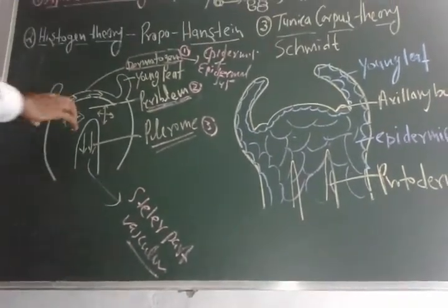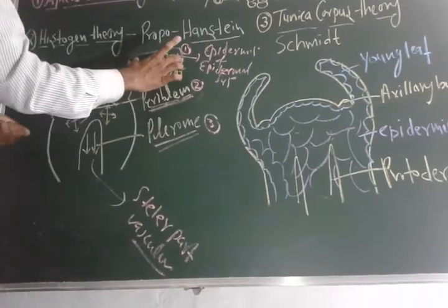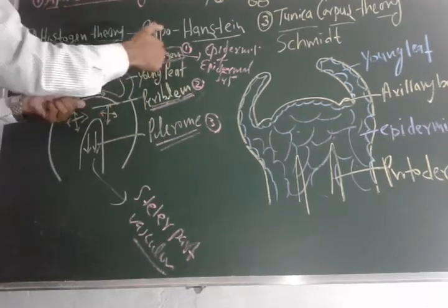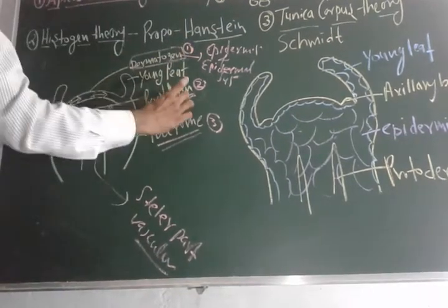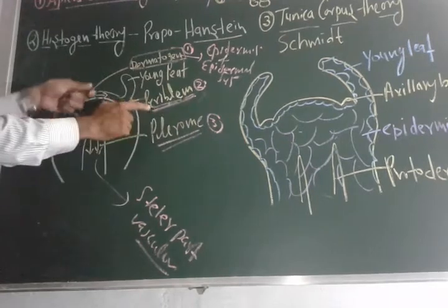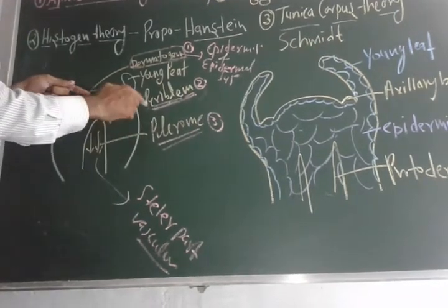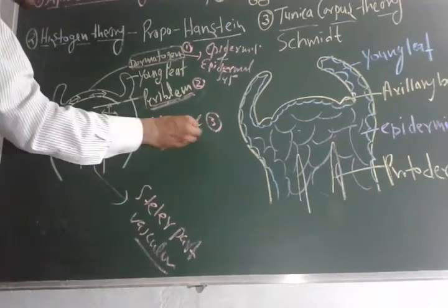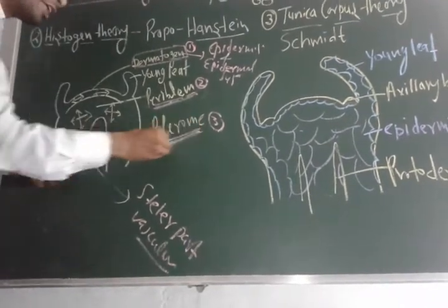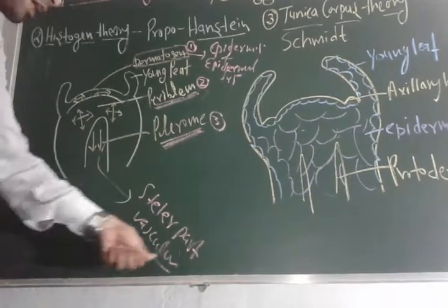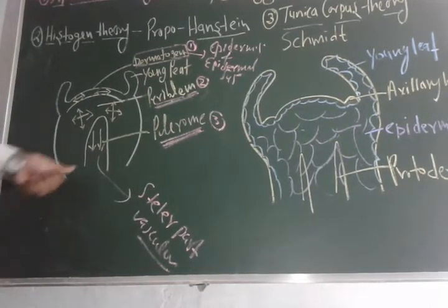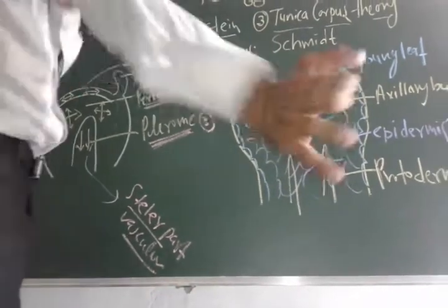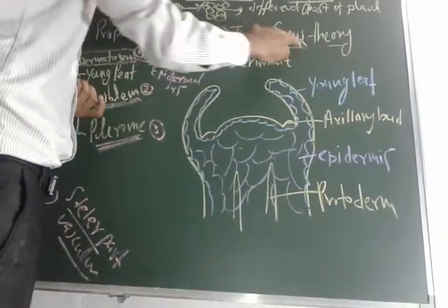According to Histogen Theory proposed by Hanstein: the outer part, dermatogen, forms the epidermis and epidermal system; beneath that, periblem forms the hypodermis, cortex, and other parts; and the inner part, plerome, forms the stellar part — meaning the vascular bundles.